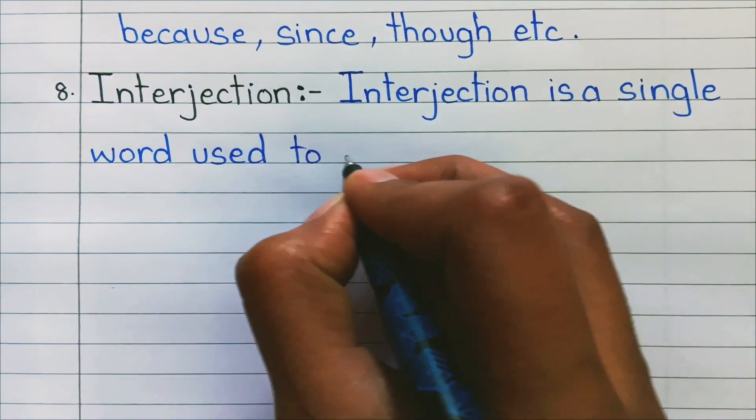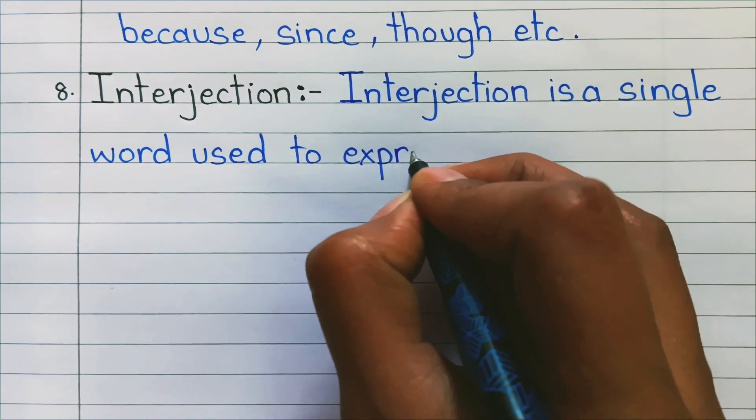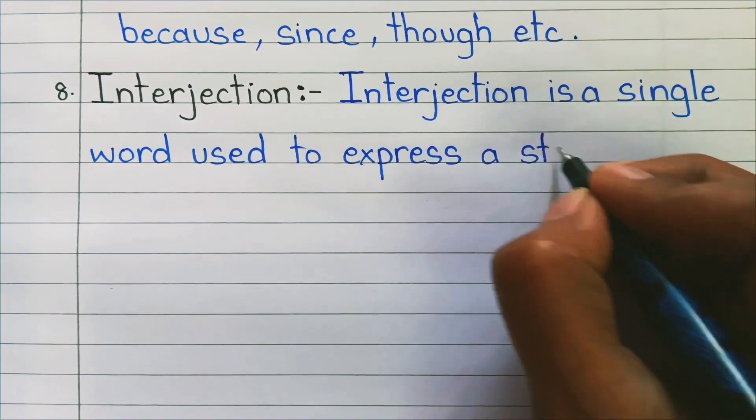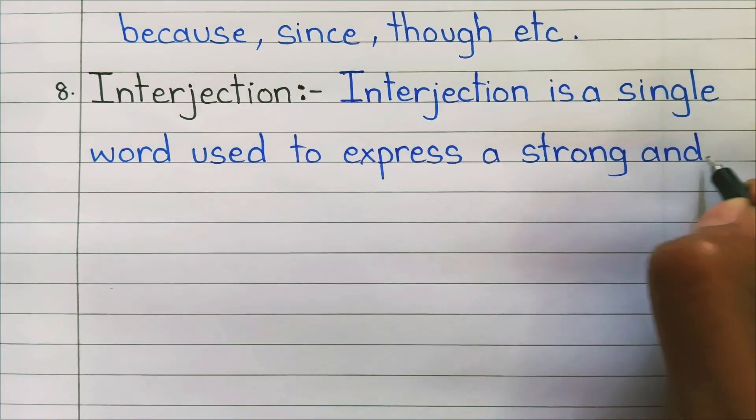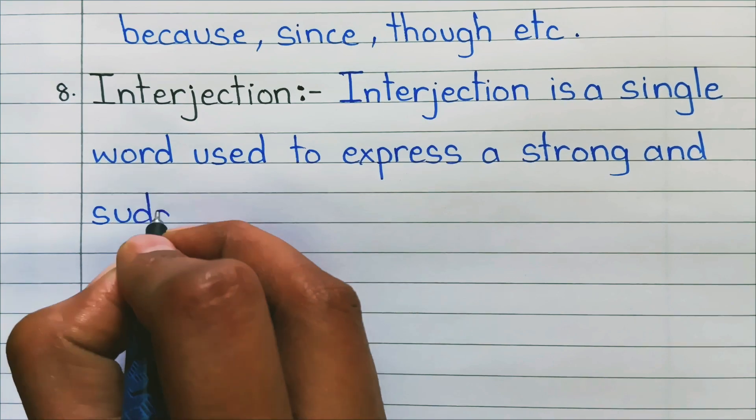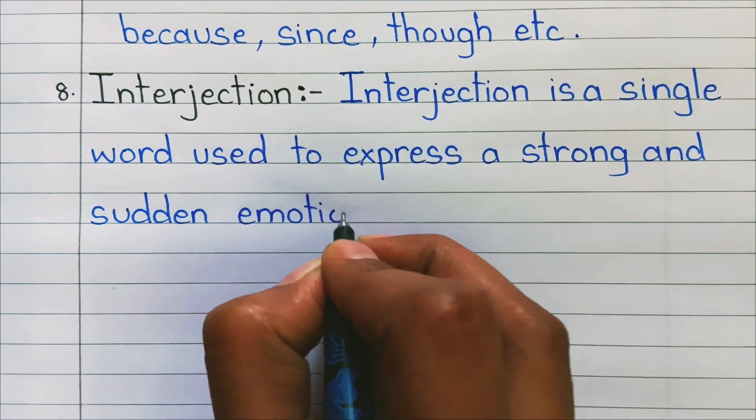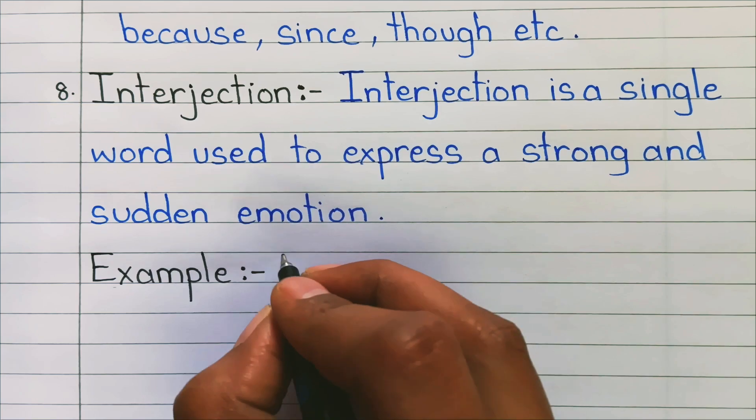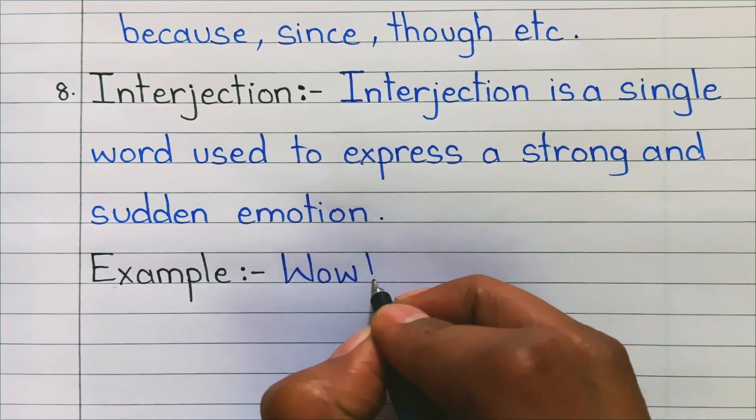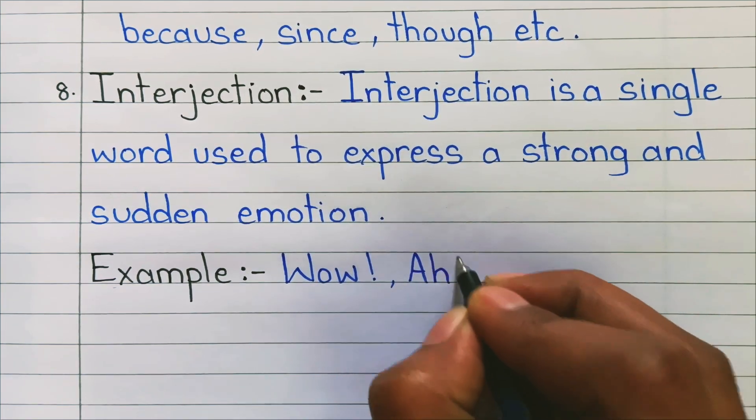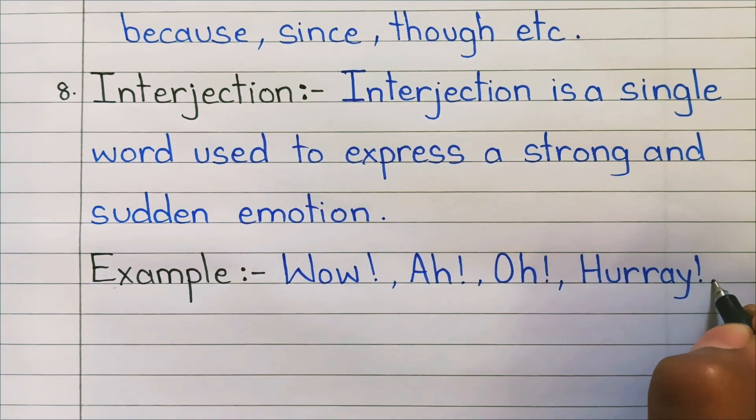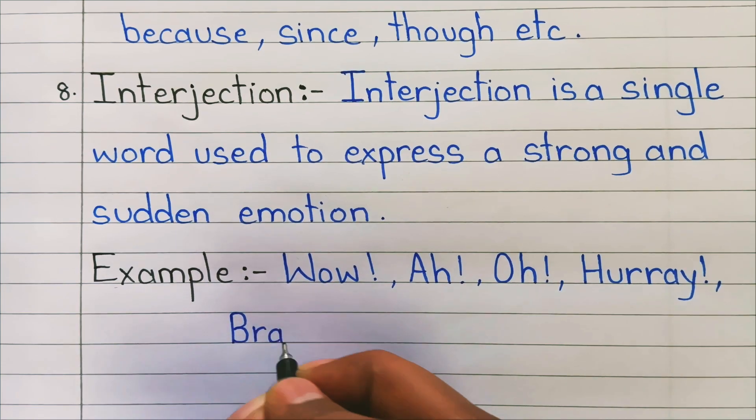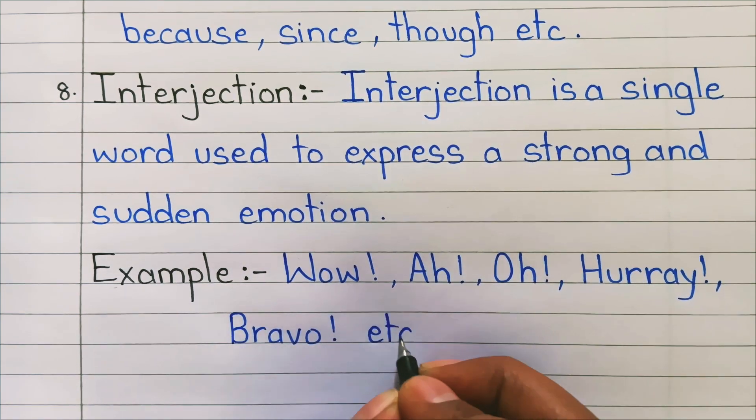8. Interjection: Interjection is a single word used to express a strong and sudden emotion. Examples: wow, ah, oh, hooray, bravo, etc.